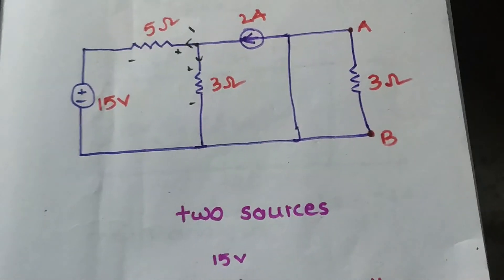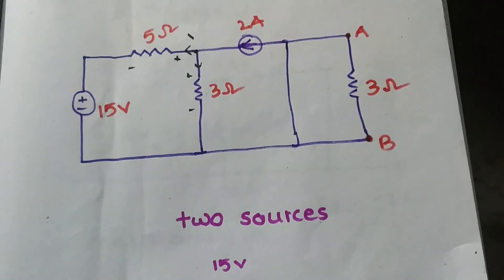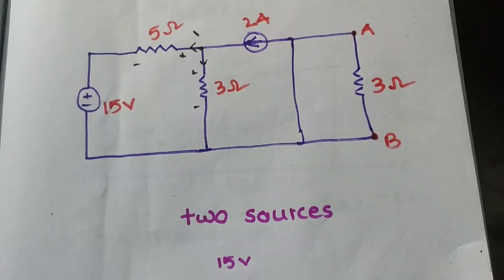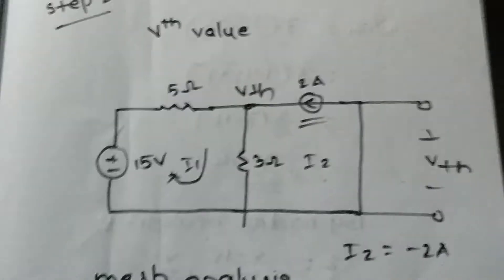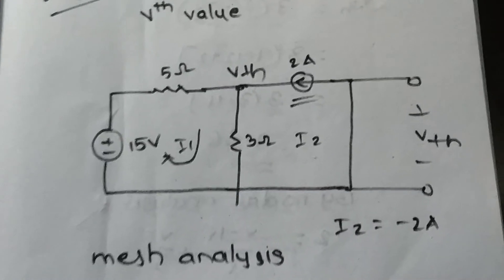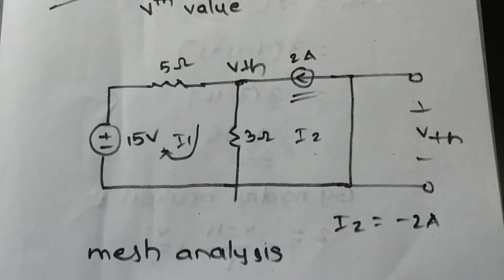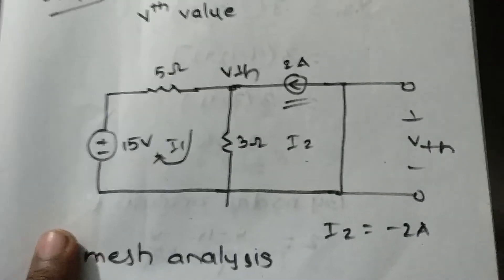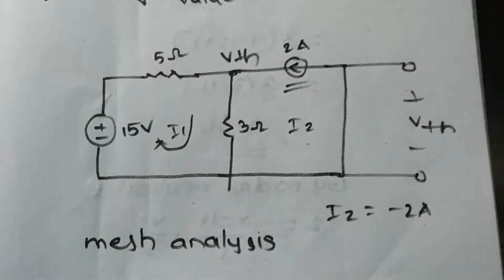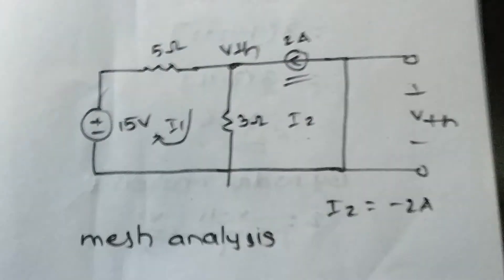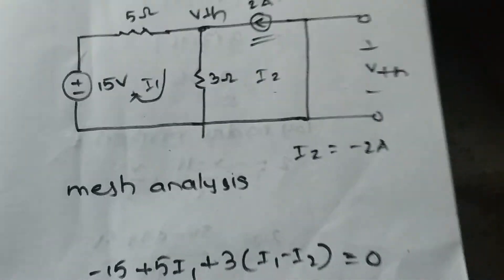Next, we want to find the Vth value. We eliminate the RL value from the circuit. The remaining circuit has 50 ohms, 2 amperes, 5 ohms, and 3 ohms. By using nodal analysis or mesh analysis, we should find the Vth value — both mesh and nodal analysis can be used here.